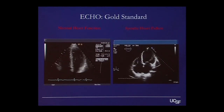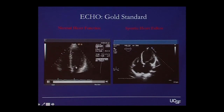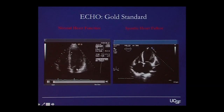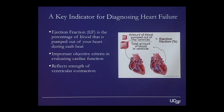The echo can tell us a lot of information — it can tell us the pumping ability of the heart, and you can also see the valves, those doors that separate the different chambers, and whether there's any leakage. The echo is a key indicator for diagnosing heart failure. It'll tell you what's called an ejection fraction, which is the amount of blood that's pumped out of your heart with each heartbeat, and it reflects the strength of the ventricular contraction.